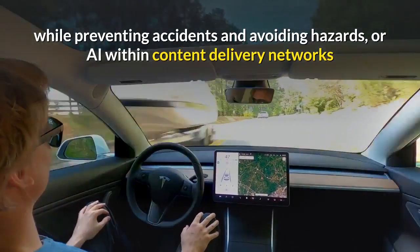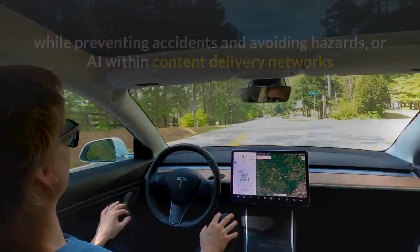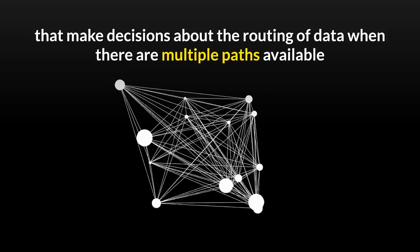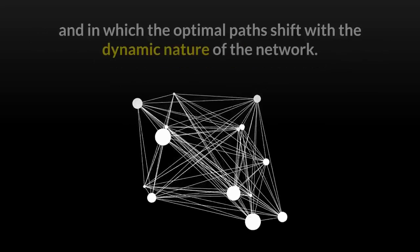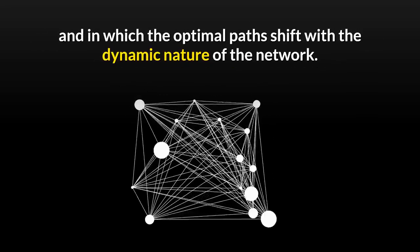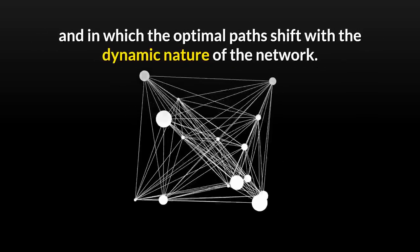Or AI within content delivery networks that make decisions about the routing of data when there are multiple paths available and in which the optimal paths shift with the dynamic nature of the network.